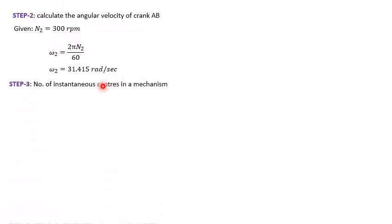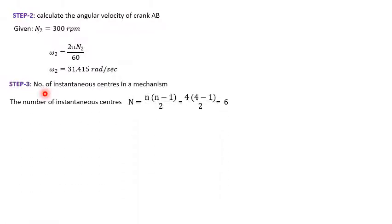The next important step is to find the number of instantaneous centers in the mechanism. The formula is capital N equals small n into (n minus 1) divided by 2, where capital N is the number of instantaneous centers and small n is the number of links. In this four bar mechanism, n equals 4, so the number of instantaneous centers N equals 6.